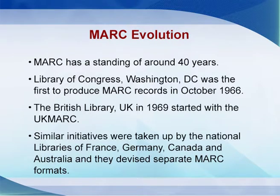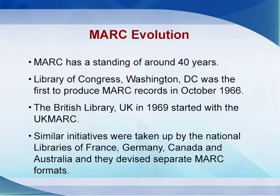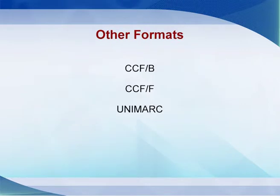MARC has been around for the last 40 years. The Library of Congress's NDMSO — Network Development and MARC Standards Office — holds responsibility for MARC 21 nowadays. Similarly, the British Library in the UK takes care of UK MARC, and similar national agencies exist in many countries. Other formats apart from MARC 21 include CCF/B (Common Communication Format for Bibliographic Records), CCF/F (Common Communication Format for Factual Records), and UNIMARC, which is very popular in the French-speaking world.